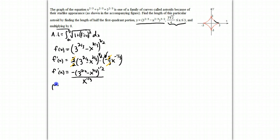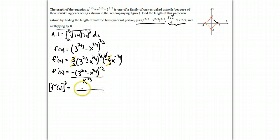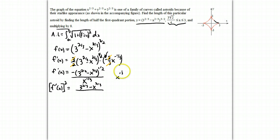We need to square that. Squaring the numerator: since it's a square root (half power), we just get what's underneath: (3^(2/3) - x^(2/3)). Squaring the denominator: squaring x^(1/3) means multiplying those exponents, giving x^(2/3).